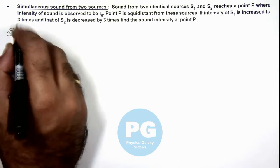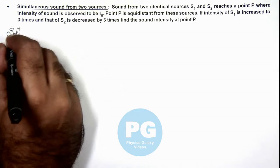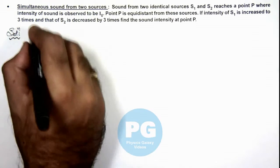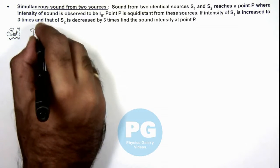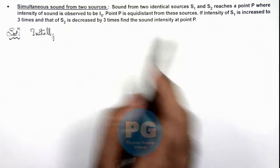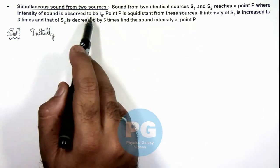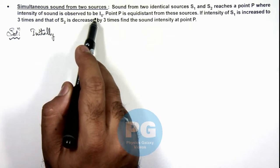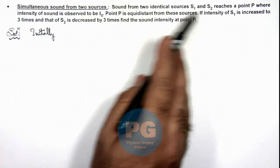Here we can write in this solution, initially, here we can write that intensity of sound is observed to be I₀ from each of the two sources.